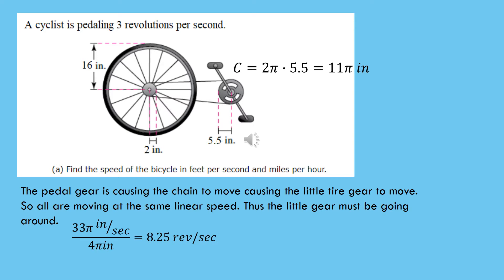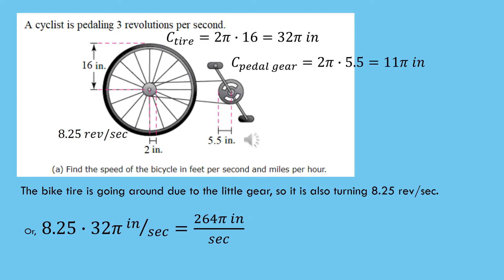The little gear connected to the tire is going around 8.25 times every second, and since it's connected to the tire, the tire is also going 8.25 revolutions every second. The tire has a radius of 16 inches, so it has a circumference of 32 pi inches. Multiplying 8.25 by that circumference gives us how fast the tire is going in inches per second — that is, 264 pi inches per second.